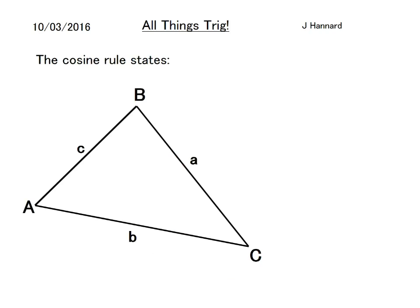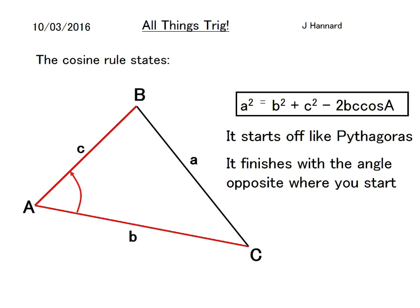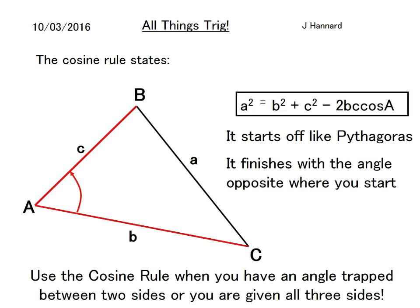Now the cosine rule. There's triangle ABC with the diagonal buddies. A squared equals b squared plus c squared minus 2bc cos A. You are given that in the formula booklet. Starts off like Pythagoras and finishes with the angle you started at. You only ever use the cosine rule if you have an angle trapped between two sides or you're given all three sides. I call this the scissor method—if you can make a scissor with the angle and two sides, it's cosine. If you're given all three sides, it's also cosine rule.